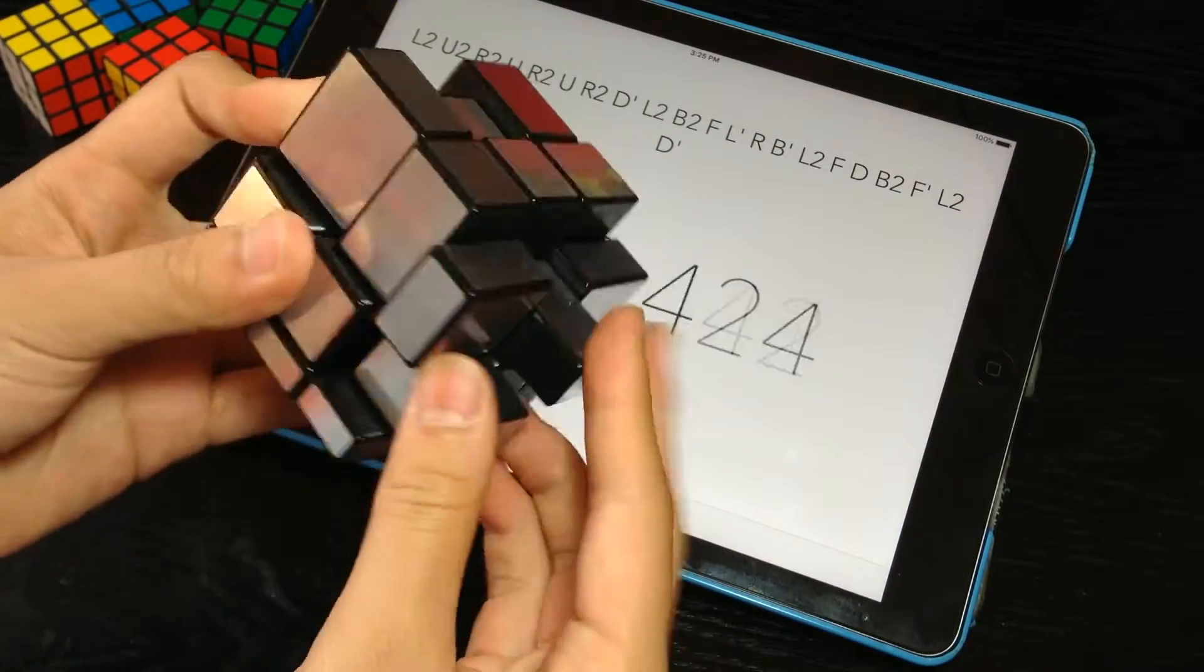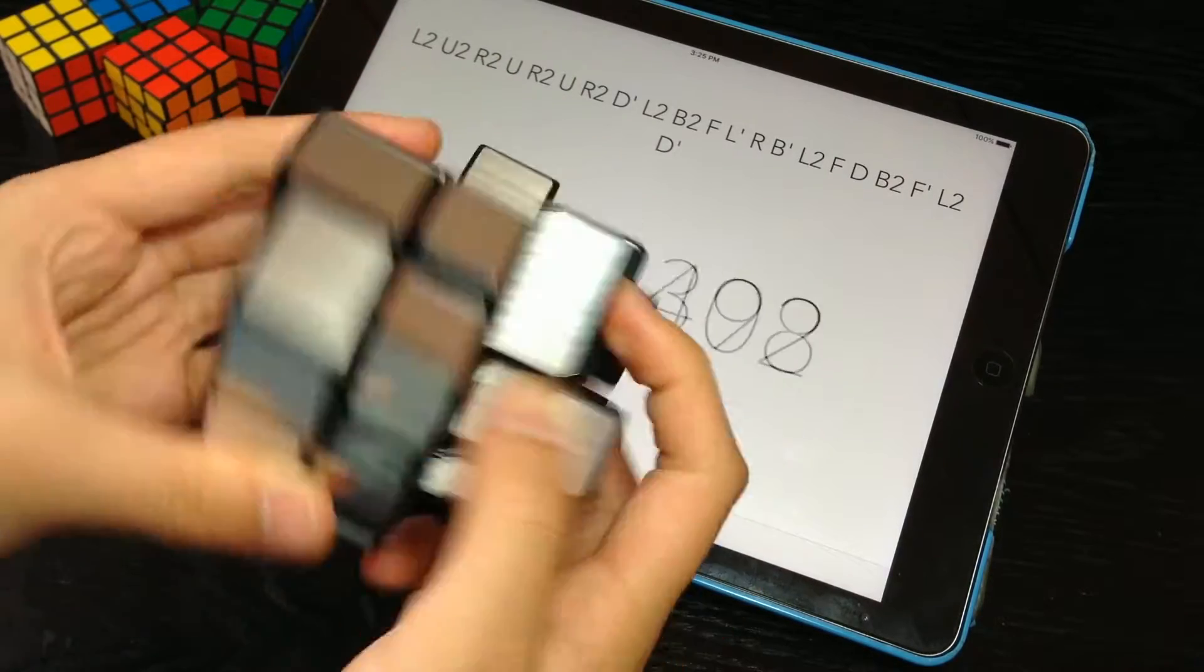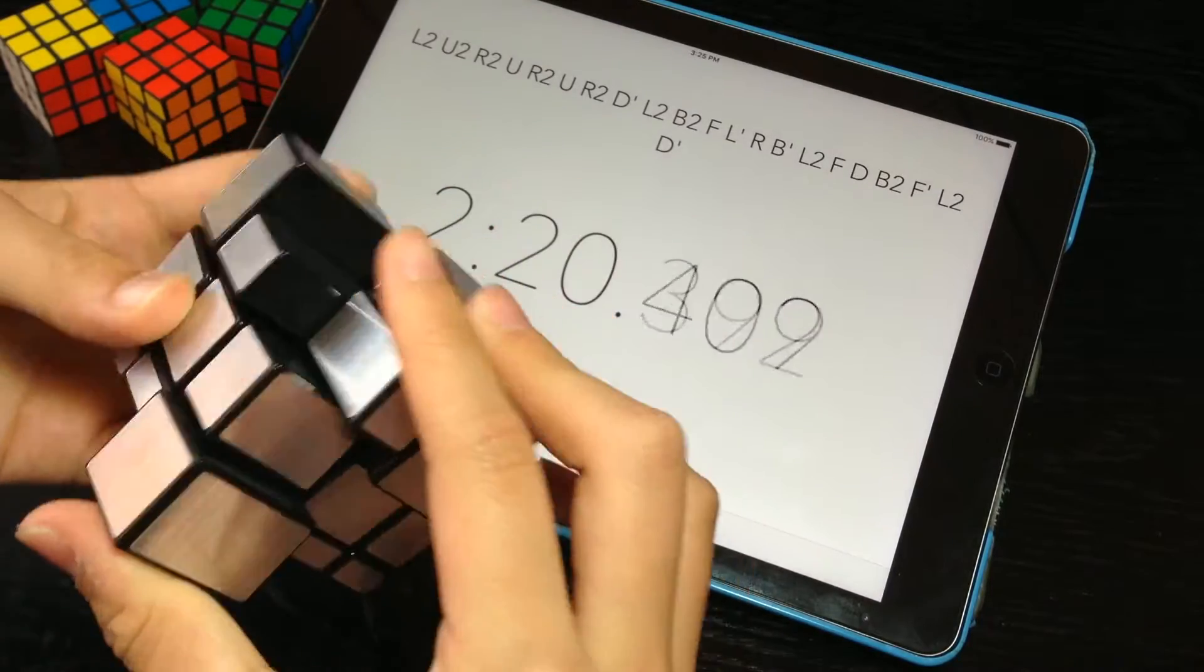So in terms of popularity I would say that the world record that would get you the most attention is the 3x3 single. However the 2x2 single wouldn't get you that much less popularity either.